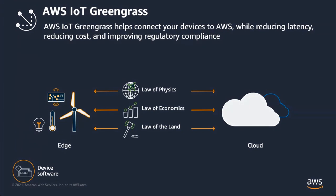AWS IoT Greengrass is one of the mechanisms we can use to extend cloud capabilities out to the edge. By providing software that you run on your own hardware, it addresses three constraints for connected devices. The first is the laws of physics — reduced latency. With compute logic running locally, you don't have to send data to the cloud, do inference, and wait for a response, which can take milliseconds to seconds. From an economics perspective, by only sending data of interest to the cloud, you can significantly reduce costs on network circuits, which matters for remote locations like farms or industrial sites with limited connectivity.